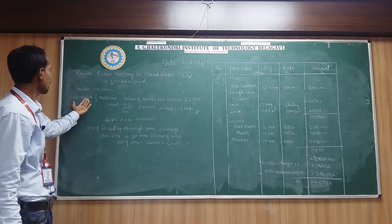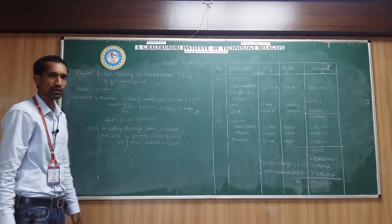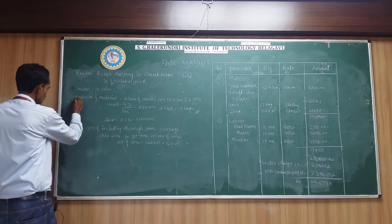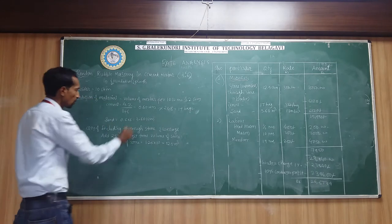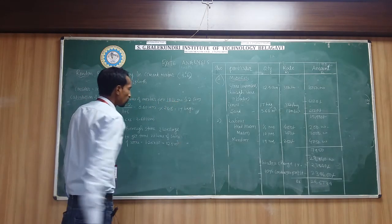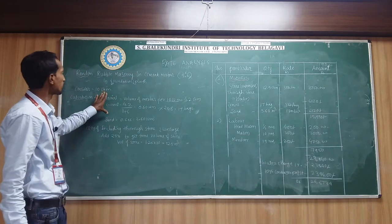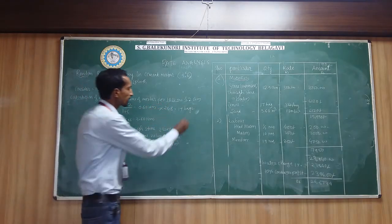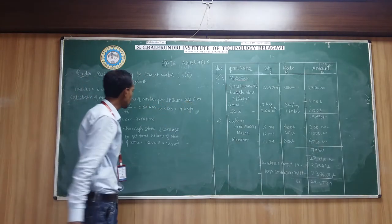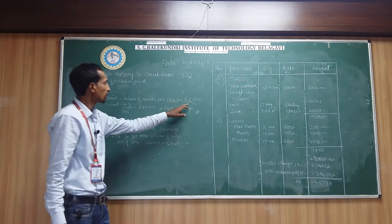First you have to calculate the material. We are going to consider 10 cubic meter. Start with the calculation of material. Volume of mortar per 10 cubic meter - for 10 cubic meter construction of rubble masonry we are taking 4.2 meter cube of mortar.